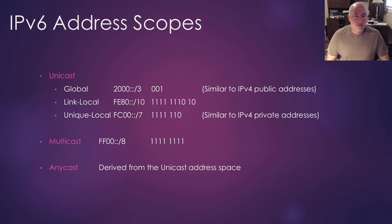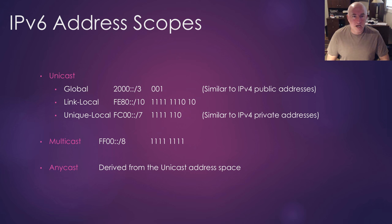Anycast addresses you can't identify easily — they're derived from the unicast address space. So you can have a global anycast, a link local anycast, or a unique local anycast; it shares the same three scopes. It doesn't have any unique identifier — you just take a unicast address and assign it as an anycast.